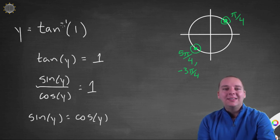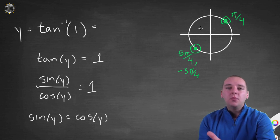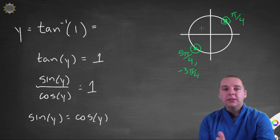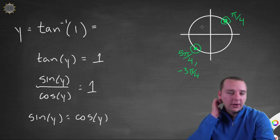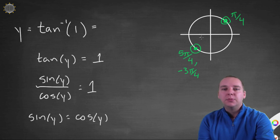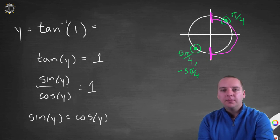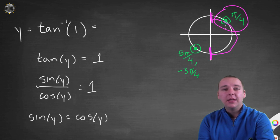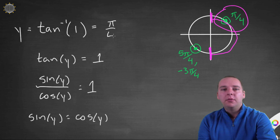What is tan inverse of one? Well we have to remember the restricted domain of the original tangent graph, which turned out to be the range of the tan inverse graph. And that was minus pi over two to pi over two. So which of these guys is between minus pi over two to pi over two. Well I think this is the only guy. So tan inverse of one would be simply pi over four. And again, that's the only correct value there.